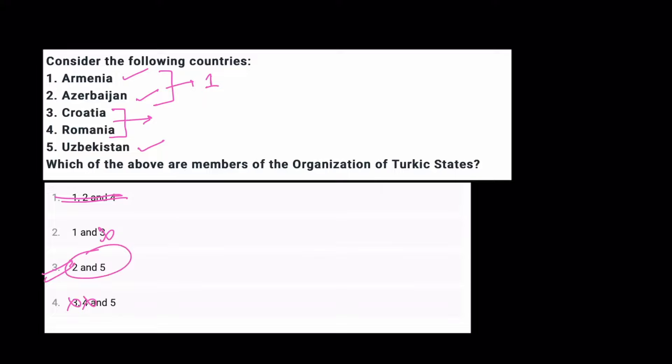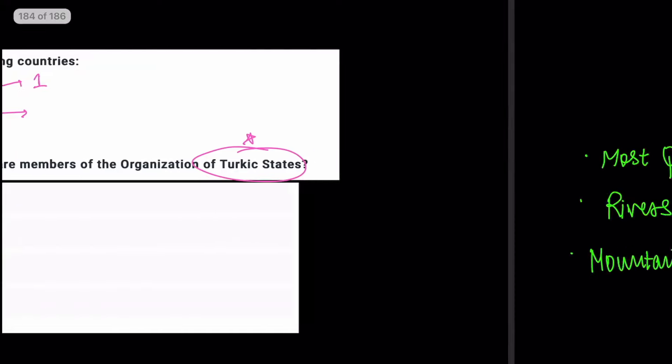Now I'm not saying this will work every time. But I'm just telling you that if you have IR knowledge, you can also solve mapping questions. And if you had mapping knowledge you will realize that Croatia is very far from Armenia and Azerbaijan and Turkey. So obviously it's very unlikely that Croatia will be a member of this organization. So both things are quite related. So if you're doing them, do them together.